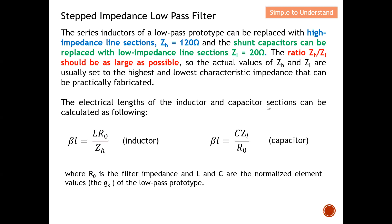The electrical length of the inductor and capacitor sections can be calculated using the following formulas. The g-term is used in both expressions. For the inductor section: β·l = g·R₀ / Z_high, where R₀ is typically 50 ohm and Z_high is 120 ohm. For the capacitor section: β·l = g·Z_low / R₀, where Z_low can be 20 ohm and R₀ is 50 ohm.